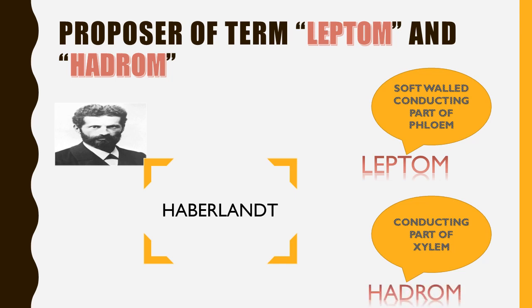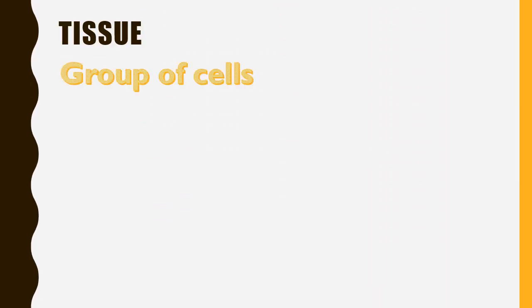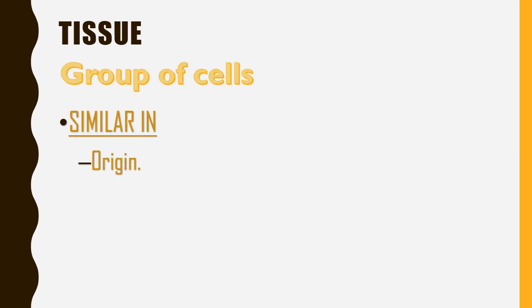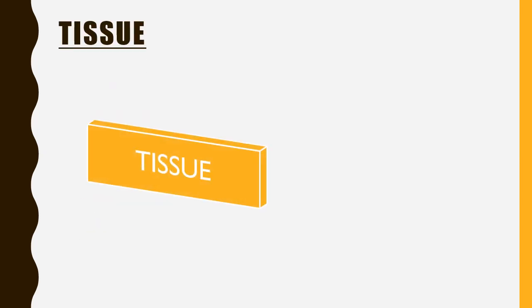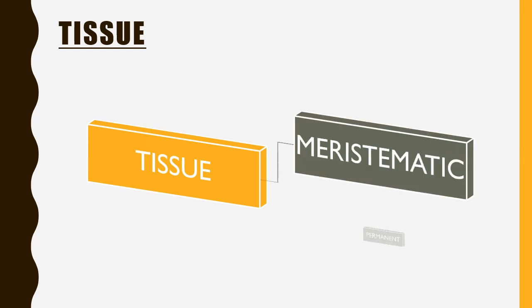Now let's figure out what tissue is. No need to worry — they are just a group of cells that are similar in: one, origin; two, structure; three, function. Tissues are divided on the basis of dividing and non-dividing cells — that is meristematic tissue and permanent tissue.